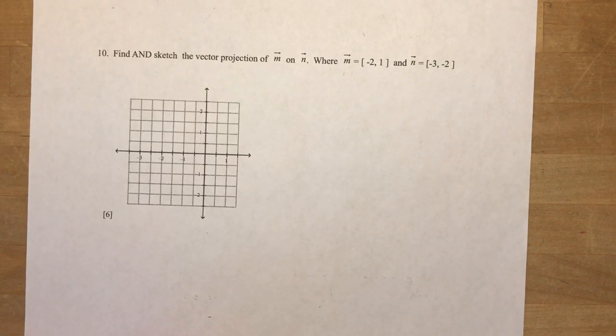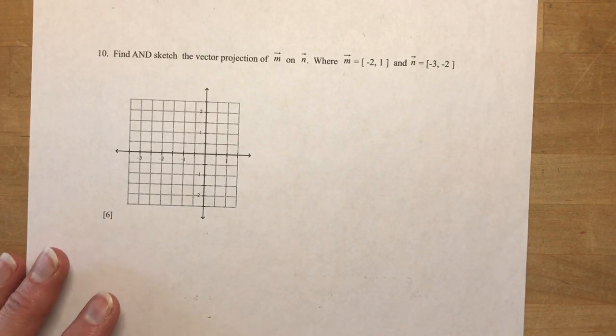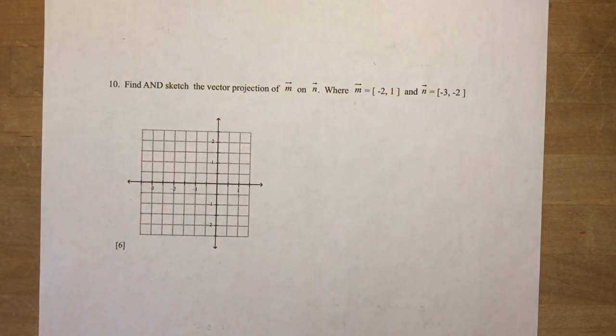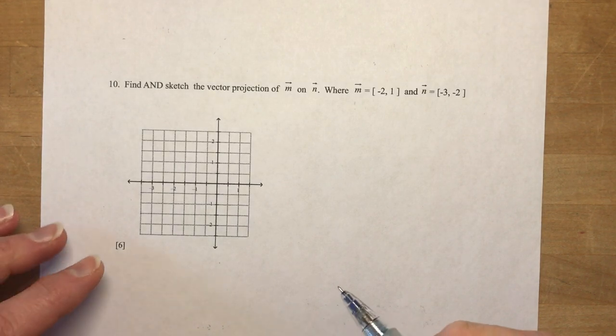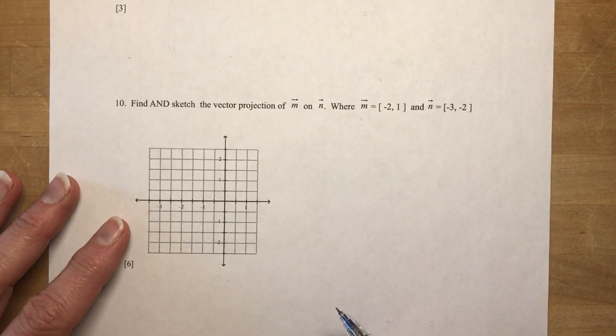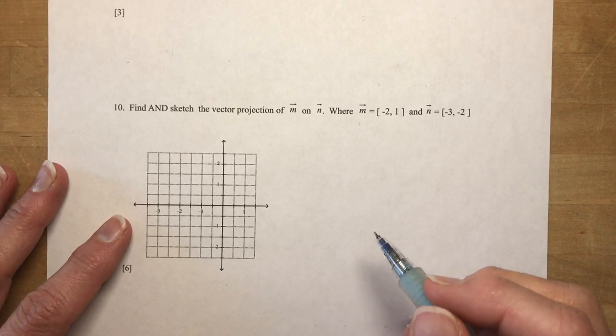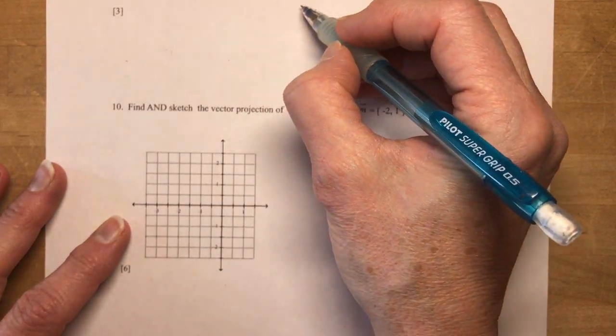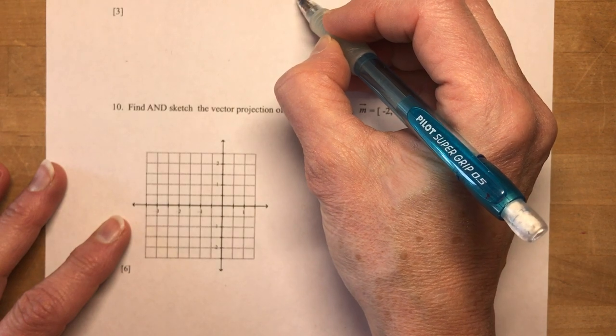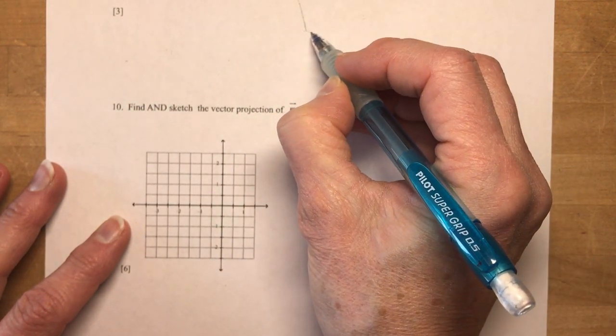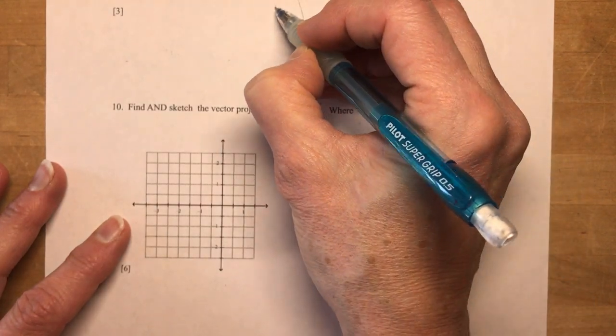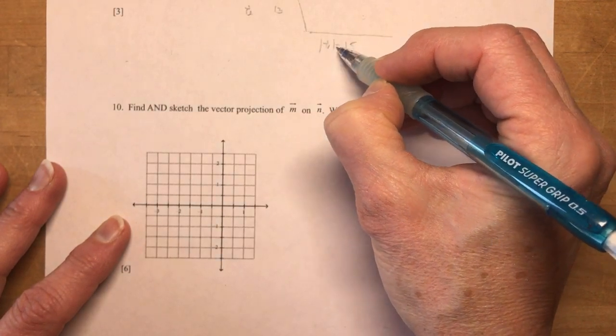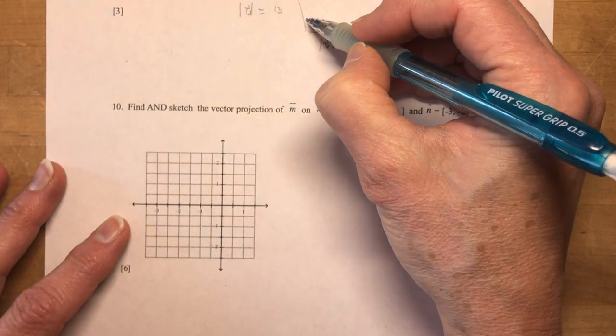Okay, we're getting there. Question number 9. Determine the scalar projection. The scalar projection of U on V, where the magnitude of U is 13, the magnitude of V is 15, and the angle between the two vectors is 118 degrees. So we have a situation kind of like this, right? So we have U is 13, V is 15, 13, so this is U, this is V, magnitude, and we have 118 degrees in here.